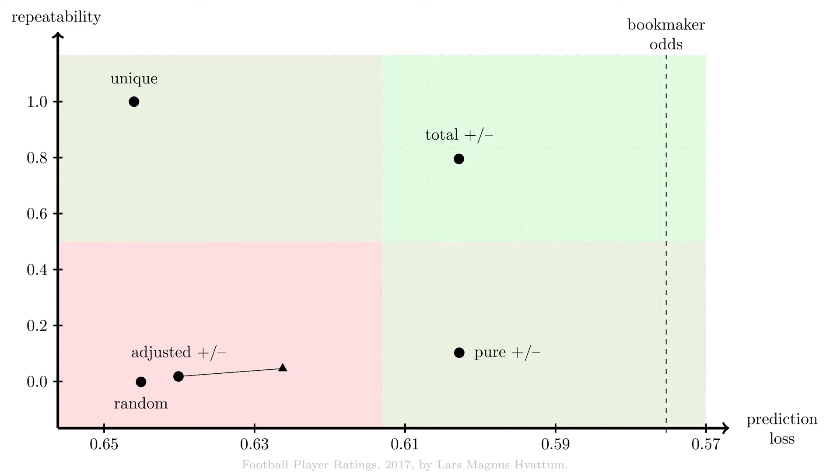However, when we start to increase the regularization parameter, we can observe that the predictive ability of our ratings increase, and also the repeatability measure is improving gradually. We then reach a point where increasing the regularization parameter further makes the predictive ability worse, while the repeatability measure is still improving. If we keep going, an extremely high regularization parameter will ensure that all players are assigned a rating ever closer to 0. We therefore halt at this point and declare that we should use the regularization parameter that provides us with the best predictions.